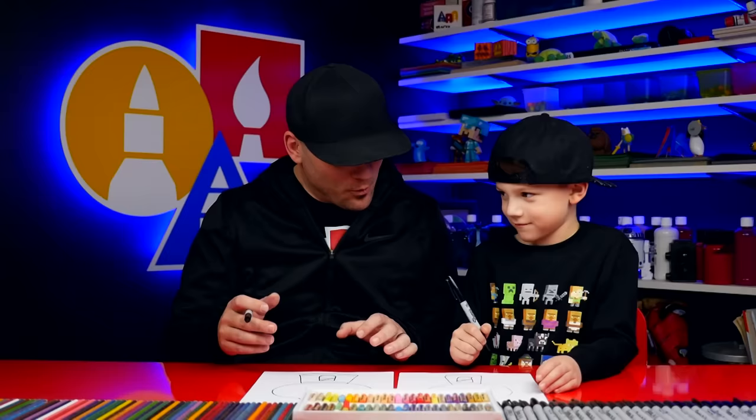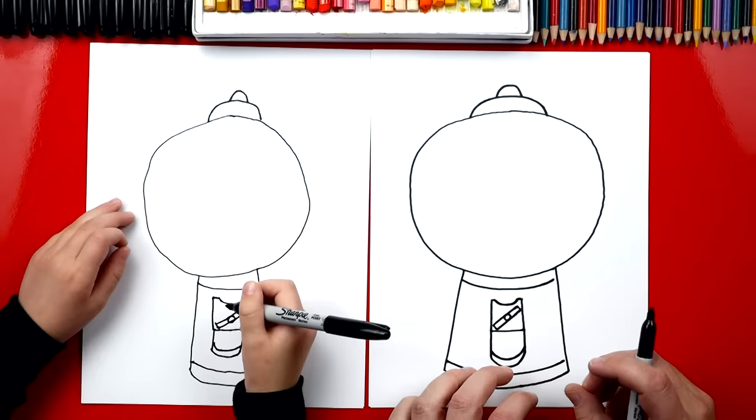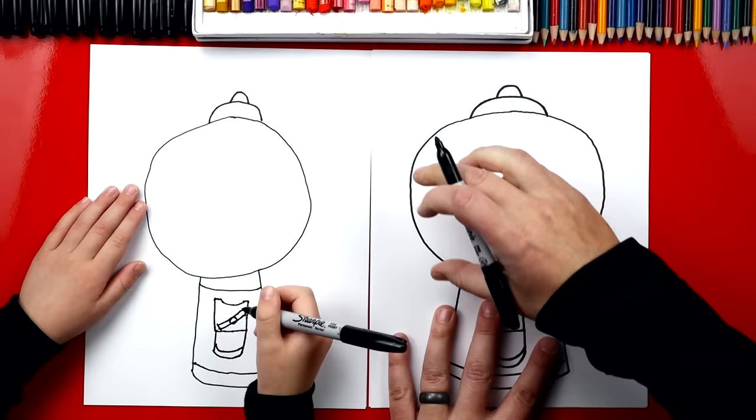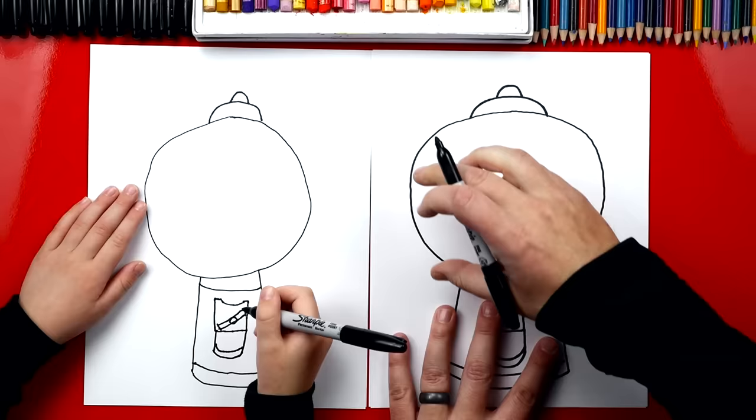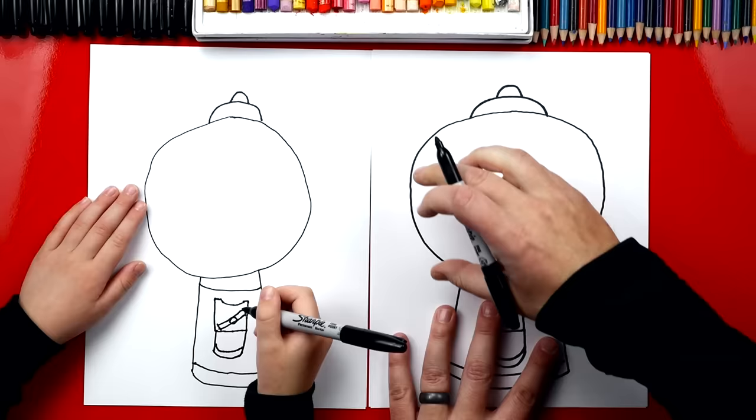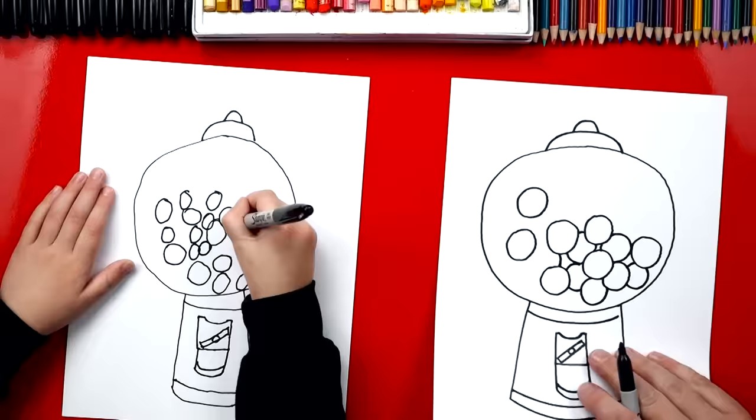We finished our gumball machines, except we're missing one thing. What are we missing? The gumballs inside. We're missing all the gumballs. That's the fun part. You ready to do the fun part? Now we're going to draw the gumballs, but we're going to fast forward this part. We're just going to draw gumballs that are about this size. And we're going to fill our gumball machine with lots of circles. So that's why we're going to fast forward. But you guys at home can pause the video to take that time to draw your gumballs. You ready to fast forward?